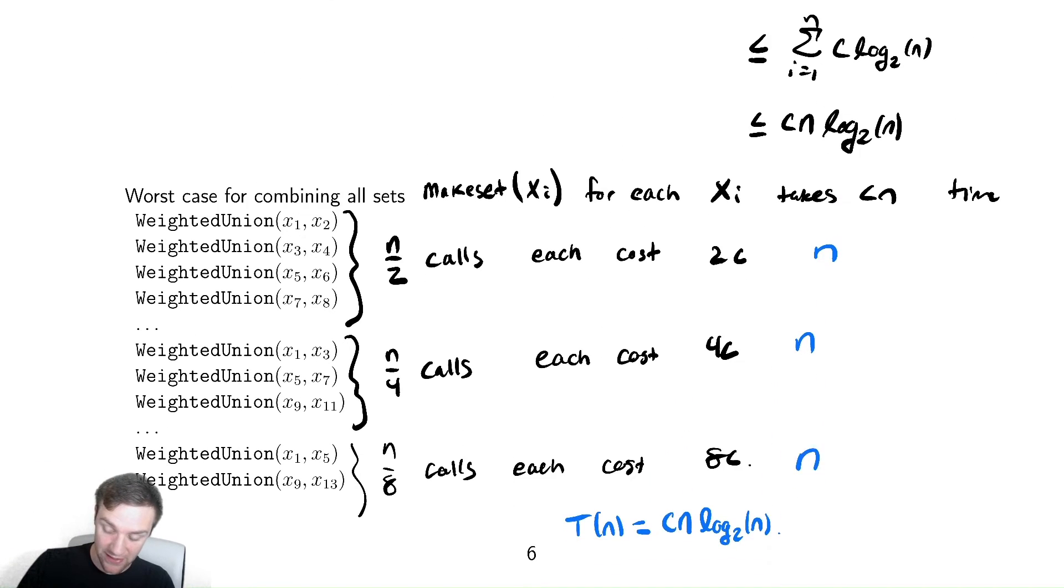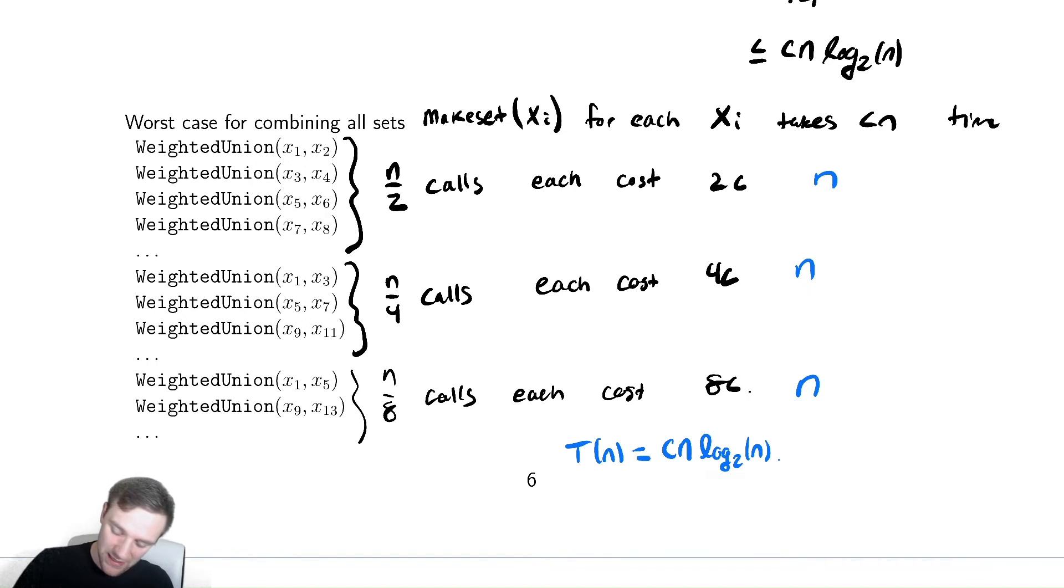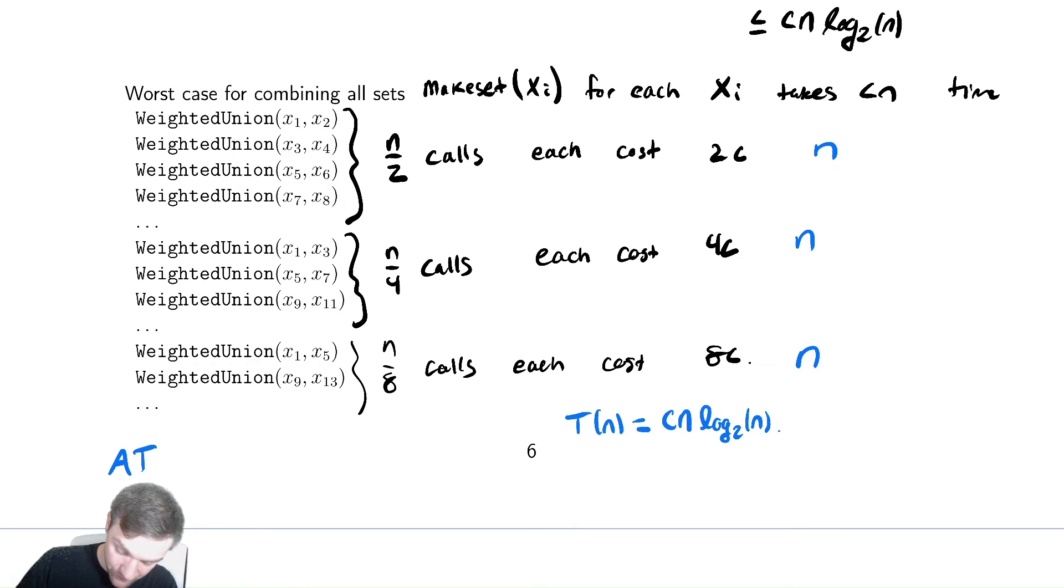If it's bounded above by cn log n and equal to cn log n for this particular worst case, we have that the amortized time as a function of n is going to be in theta of how many unions did I do? I did n unions, and the cost was n log n, so the amortized runtime would be theta of log of n. It might not be obvious I did n unions, but if you add up one half plus one fourth plus all the way up, you get one as your result. So our amortized runtime for weighted union is log of n. That is quite a good runtime.